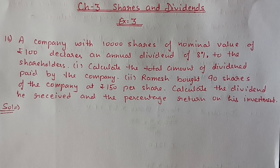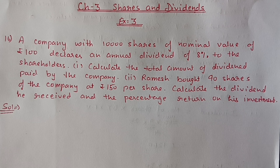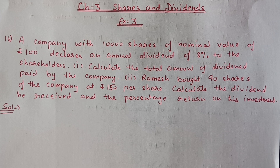Hello students, we are doing chapter number 3 - Shares and Dividend, Exercise 3. Till question number 15 we have already discussed in the previous video. Today we are starting from question number 16. A company with 10,000 shares of nominal value 100 rupees declares an annual dividend of 8% to the shareholders. Calculate the total amount of dividend paid by the company. Ramesh bought 90 shares of the company at 150 rupees per share — calculate the dividend he received and the percentage return on his investment.